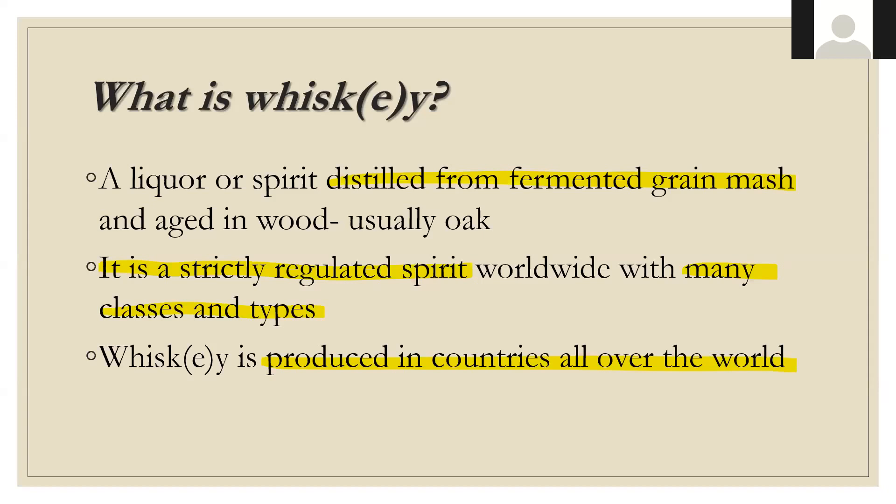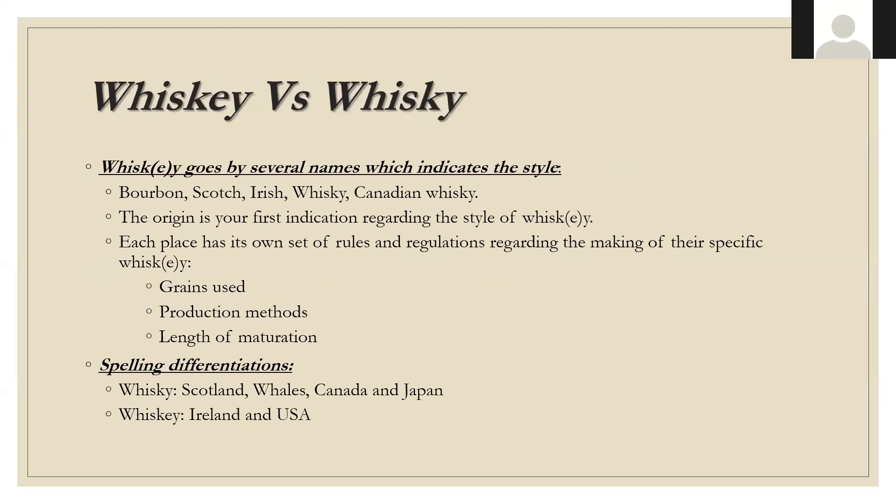Whiskey is a strictly regulated spirit worldwide with many classes and types, produced all over the world. Whiskey with an 'e' versus without can indicate the style — you know that bourbon is going to be a certain style, Scotch a certain style, Irish, and then Canadian whiskey. The origin is your first indication that helps you understand the style.